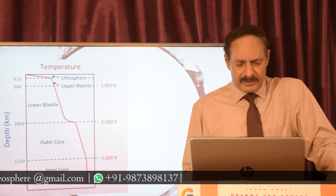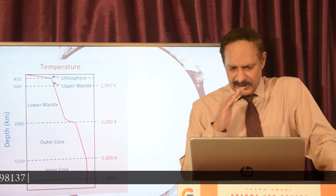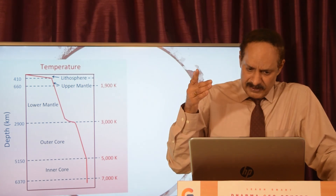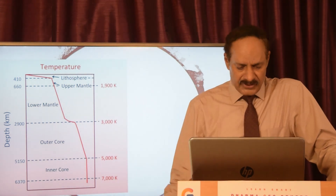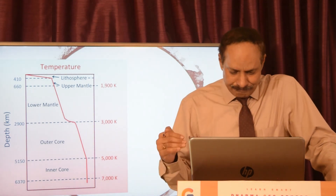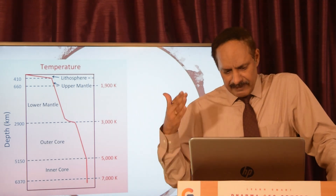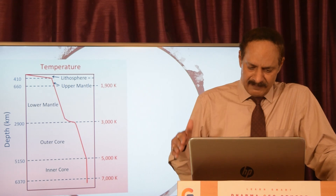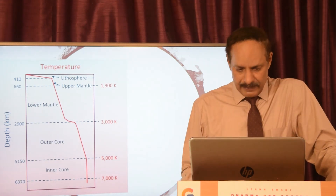This diagram shows how the temperature from the lithosphere gradually changes — from the upper mantle to the lower mantle it's almost a straight curve, then it changes slightly at around 2,900 kilometers depth. From the outer core it moves in a more vertical direction, and in the inner core it is nearly vertical.